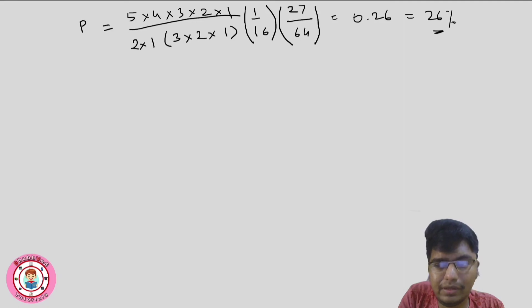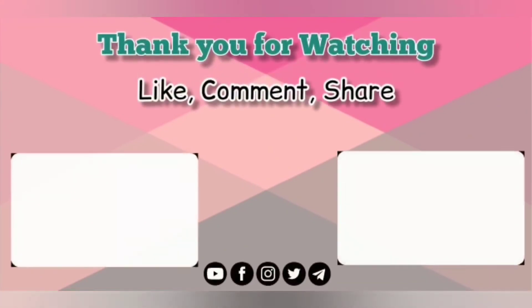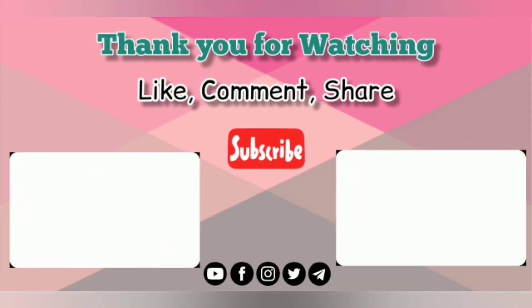Questions like 'out of 5, 2 are recessive' or 'out of 5, 3 are recessive' — this type of question we solve using binomial expansion. That's it for this video, I hope you have understood it. Thank you for watching. If you liked it, please share it, don't forget to subscribe and press the bell icon. Follow us on all social media pages and join us on Telegram for the latest updates — all links are in the description.